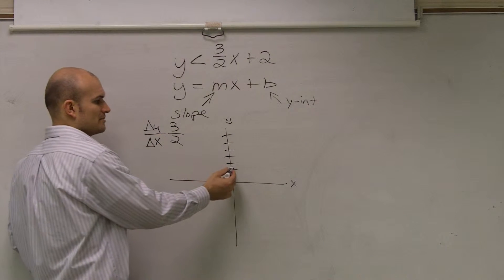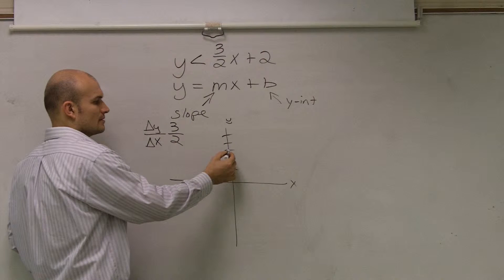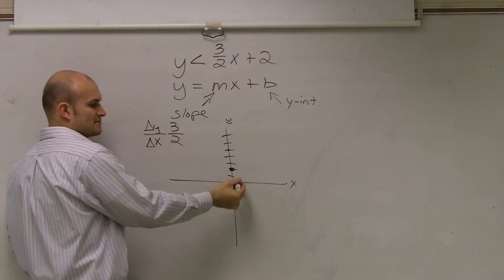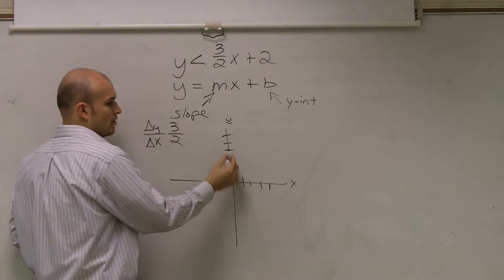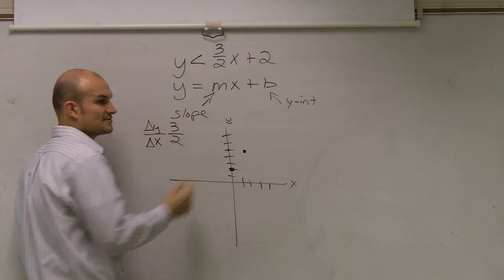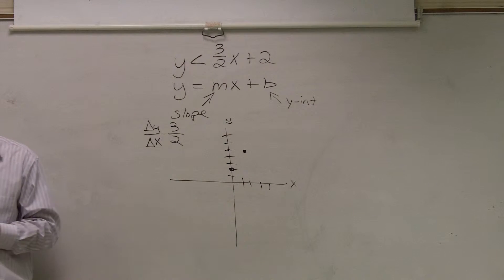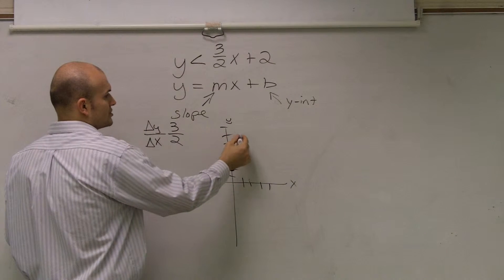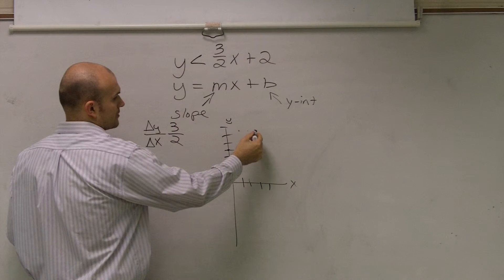So since that's positive 3, I'm going to go up 3, up 3 units. Then the change in my x-coordinates is positive 2. So I'm going to go up 3, and then positive 2 is leaving 2 to the right. You can continue that pattern to make your line. Up 3, 1, 2, and 3, over 2.